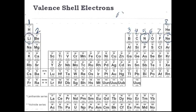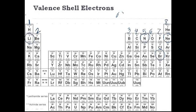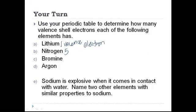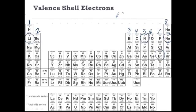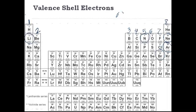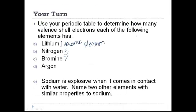Bromine is all the way over on the right hand side in group 17. We know that everybody in group 17 has seven valence electrons. And finally, argon is all the way over in group 18. And we know that all of the elements in group 18 have eight valence electrons.